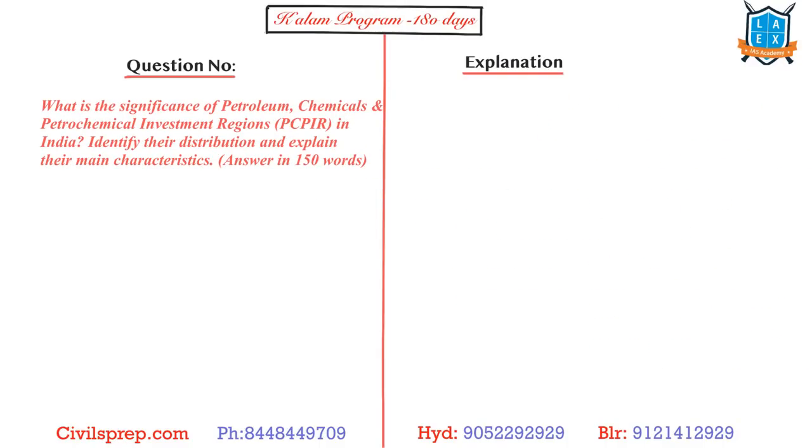The next question that we need to focus is about the petroleum, chemicals and petrochemical investment regions in India. Identify their distribution and explain their main characteristics. Now when you look at this question, the significance of petroleum, chemical and petrochemical investment regions in India is - see, India is one of the largest importer of oil and natural gas. Similarly, India is also one of the largest exporter of refined minerals. So when you look at almost all these coastal regions, I'll come to the distribution now. What are these? You will be having refineries present almost around all the SECs that are there. In most of the SECs that say yes, they are planning for at least one refinery.